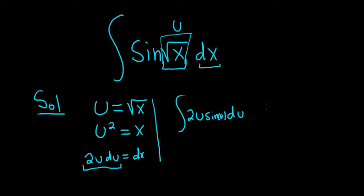All right, so now we have 2u times the sine of u. So we could use integration by parts, but it might be easier to use something called tabular integration.